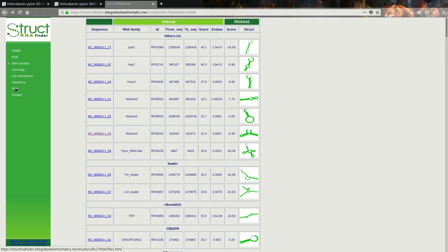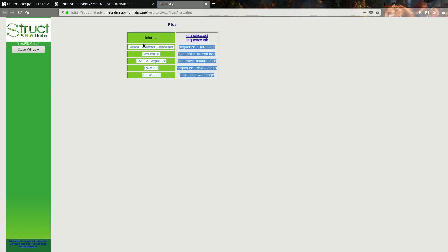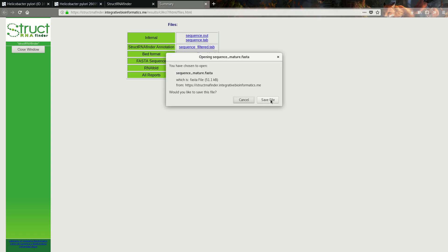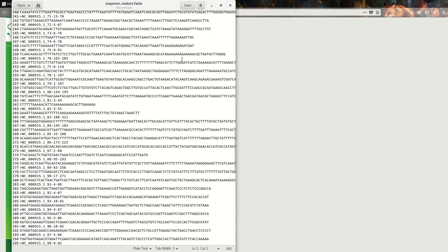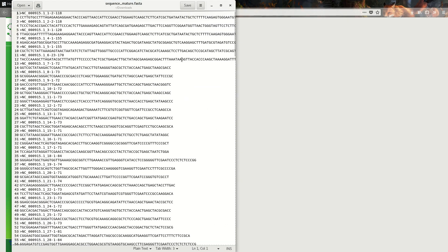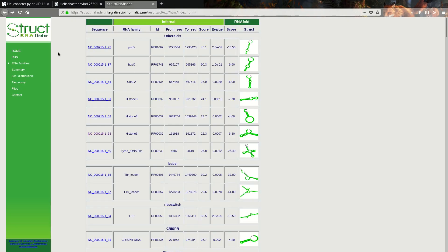Lastly we have the files. In this file section we can see all the intermediate files used in the background programs. If you want the FASTA sequences for all sequences found as RNA sequences, we can save it and open it to see all the RNA files with their sequences. That was it for StructRNA Finder, I hope this was helpful.